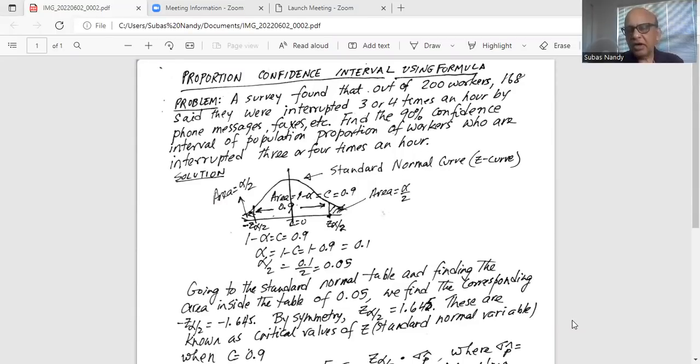So first I show you a diagram of the standard normal curve. This is the Z curve and it's a bell-shaped curve. The center where the peak is the highest on the horizontal axis, Z value is zero.